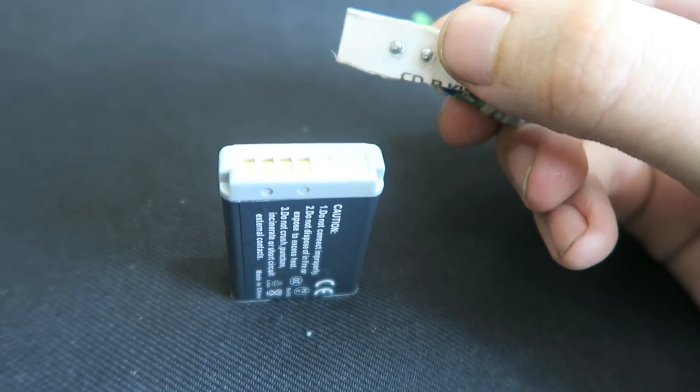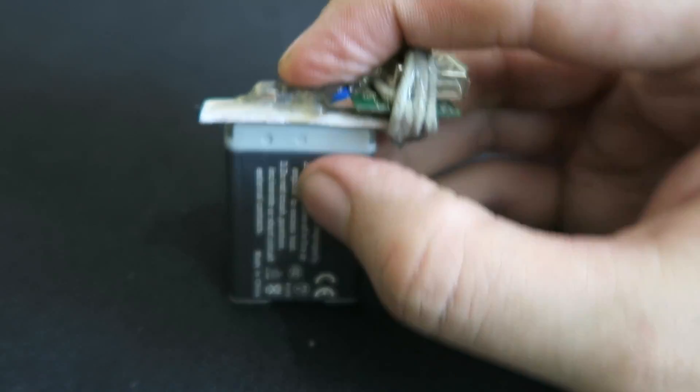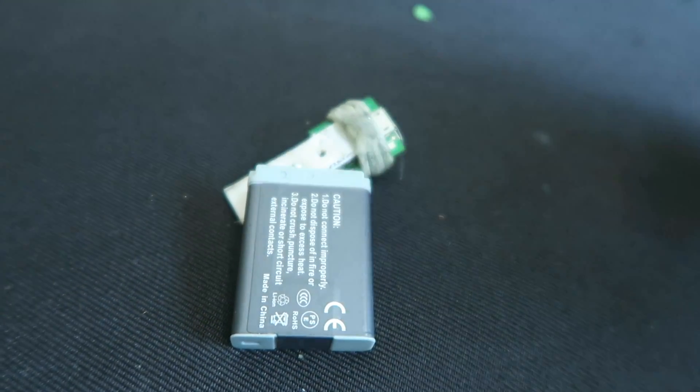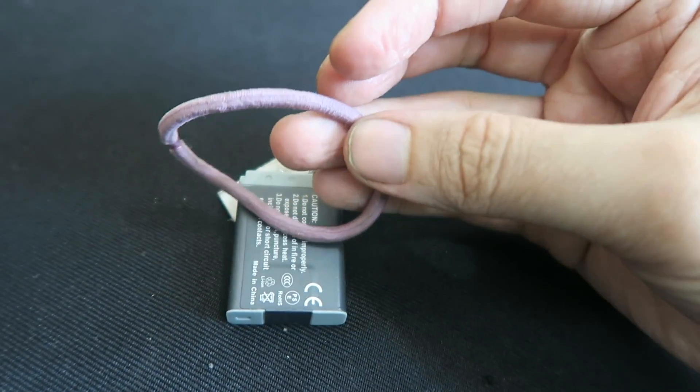And it's pretty simple to use. You just line the contacts up on the battery and that's it. Plug in your USB charger. Now you might be thinking well that's not going to hold, that's just going to fall off. Well for that I just used a simple hair tie.